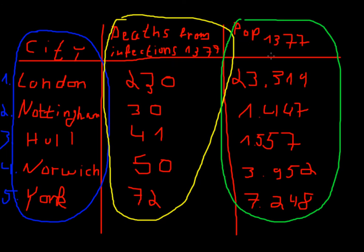So the response variable is explained by its explanatory variable. That's the difference. Observation, response variable, and this is our explanatory variable. We are trying to explain something. We are trying to explain the deaths from infections in 1377 by its population in the same year. That's the difference.